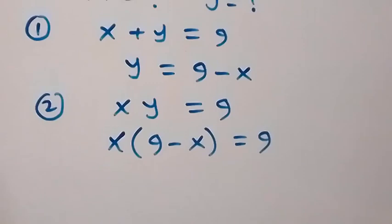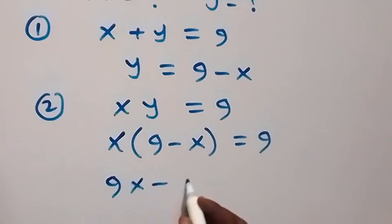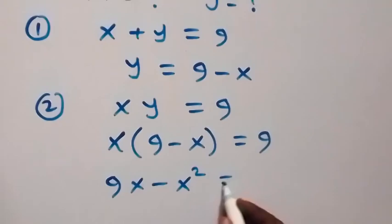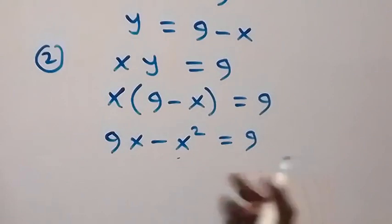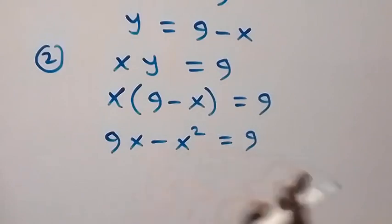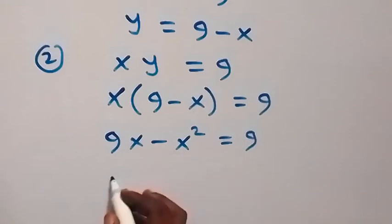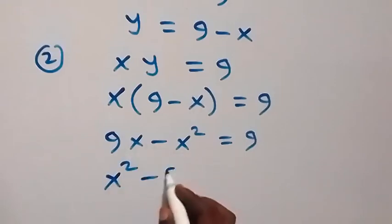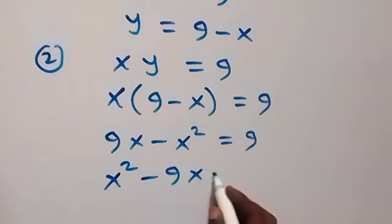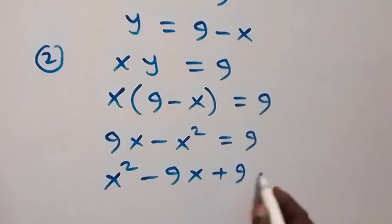Then we can open this bracket with x, and we have 9x minus x squared equals to 9. Then from here, let's take everything to one side. Minus x squared becomes plus, so we have x squared minus 9x plus 9, which equals to 0.